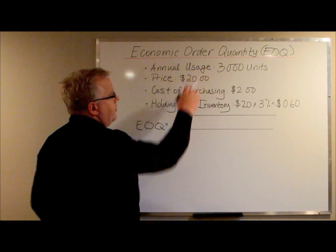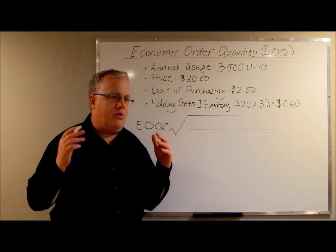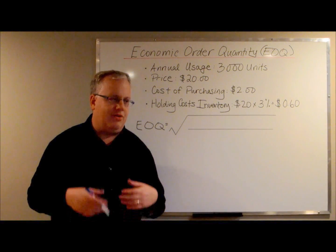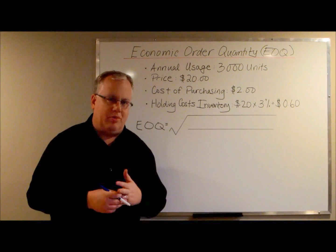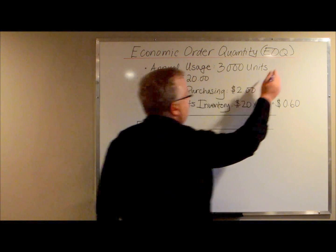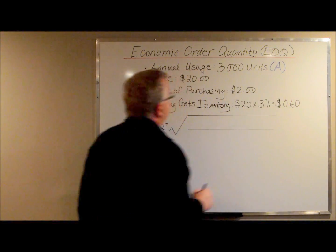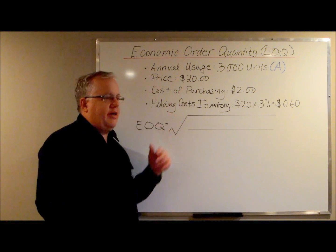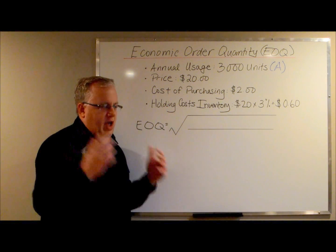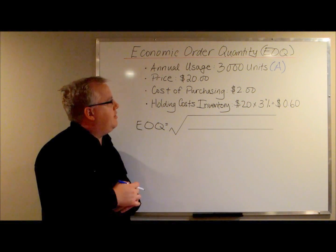Annual usage is the simplest portion of the calculation. You should know exactly how much you use of a given raw material, consumable, or finished good. In our example, it's 3,000 units — we're going to call this A. The price is also fairly simple: how much are you paying for this part that you're buying? In this case, it's $20.